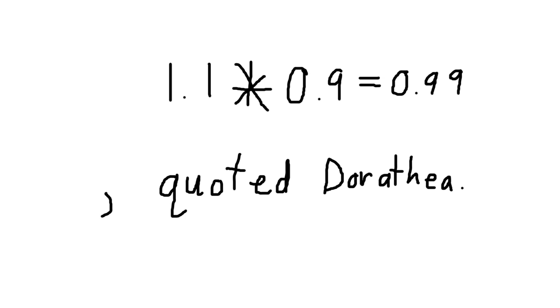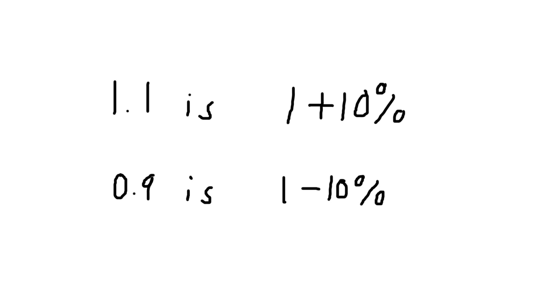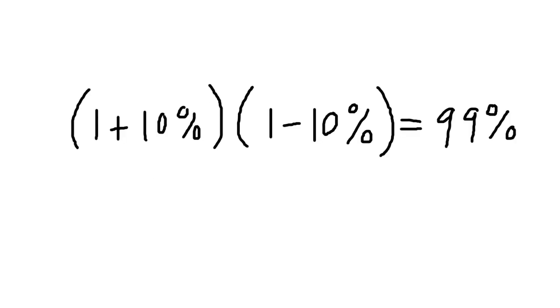Isn't it true that 1.1 is a 10% increase from 1? And isn't it true that 0.9 is a 10% decrease from 1? Therefore, if you start with 100% of something, then increase it by 10%, then decrease it by 10%, the result is 99% of what you started with.